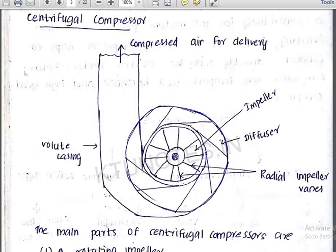In a dynamic compressor, we deal with kinetic energy and pressure energy. Now let's look at the working parts of the centrifugal compressor.